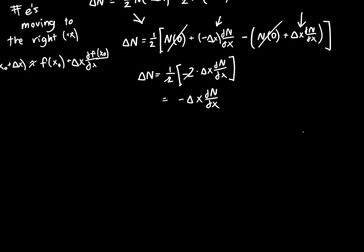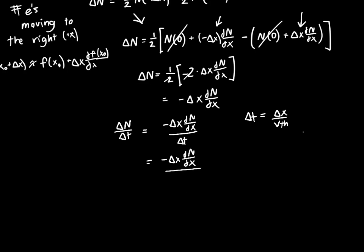Now we plug that into our original equation. We want delta n per unit time: minus delta x times dn/dx divided by delta t. We can re-express delta t — the time it takes to traverse delta x — as delta x divided by the thermal velocity, since this is a diffusion process. The delta x terms cancel, the thermal velocity comes up top, and we get minus dn/dx times v-thermal.